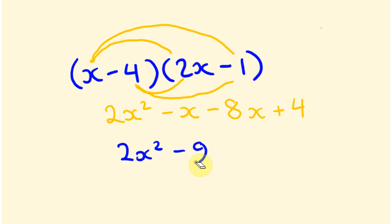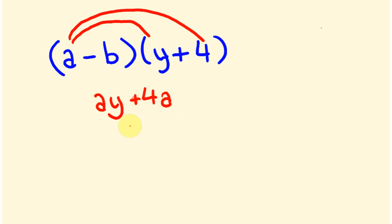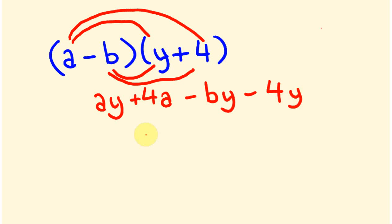Now one that looks a little different but works exactly the same way: (a minus b)(y plus 4). Don't worry about the different letters — treat it exactly the same. So: a times y is ay, a times 4 is 4a, minus b times y is minus by, and minus b times 4 is minus 4b. There are no like terms here, so that is our final answer.